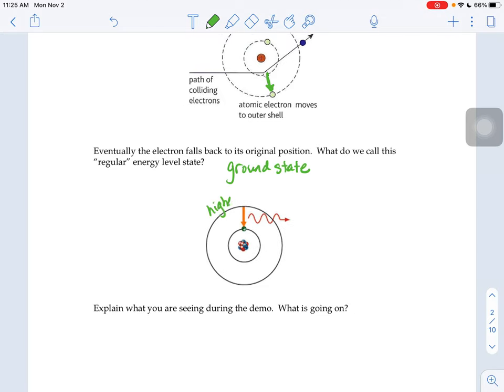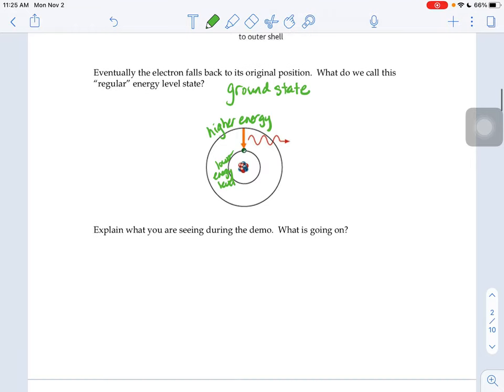So what ends up happening is the electron that was in this outer higher energy level, the excited state, when it drops back down to a lower energy level, that difference in energy has to go somewhere. And that energy is given off in the form of light.